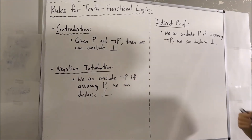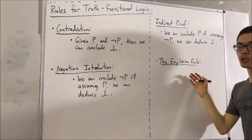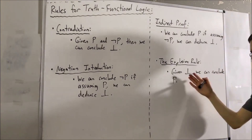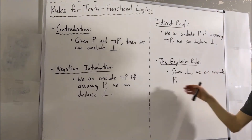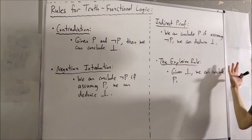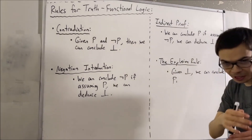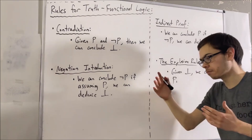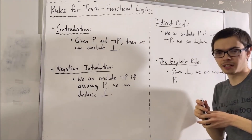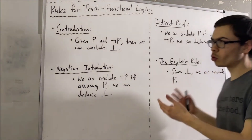There's one more rule, and this one's the weirdest one — it's called the explosion rule. The way the explosion rule works is, if a contradiction is true, then any statement is true. I try to avoid it whenever I'm writing a proof, because a contradiction is never true. But the way you can think about it is: if I upload this video and I don't upload this video, then I'm going to eat this marker. You can conclude that any absurd statement is true if a contradiction is true. These are the rules for truth functional logic.